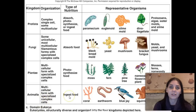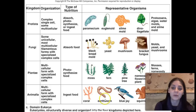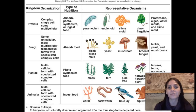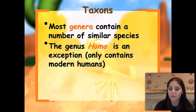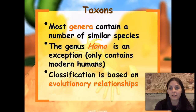Animalia is the last kingdom within domain Eukarya. Animals are multicellular and form specialized complex cells such as nerve cells, skin cells, heart cells, and blood cells. They are ingestive heterotrophs. Corals, sponges, jellyfish, earthworms, blue jays, squirrels, starfish, sea anemones, fish, reptiles, amphibians, birds, insects, and bats are all classified as animals. The genus Homo — which contains modern humans, Homo sapiens sapiens — is the only exception in that it contains just one species. Classification is based on evolutionary relationships.